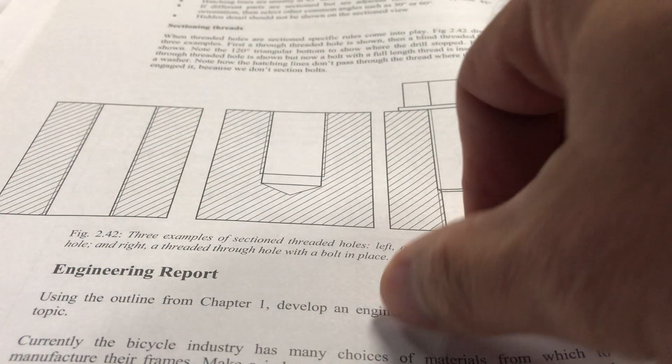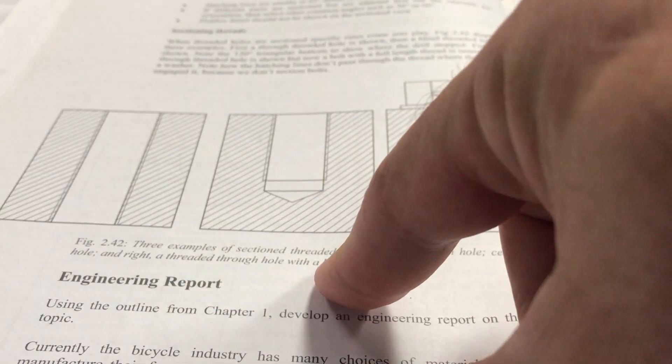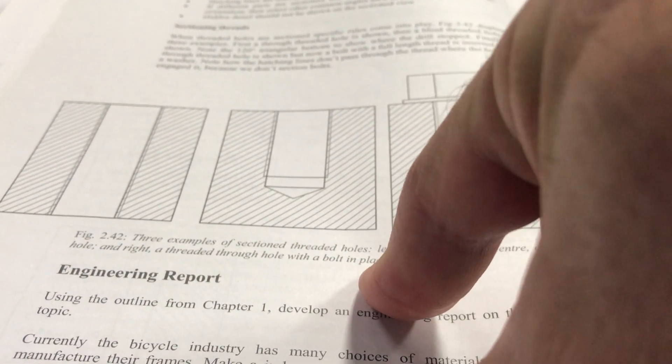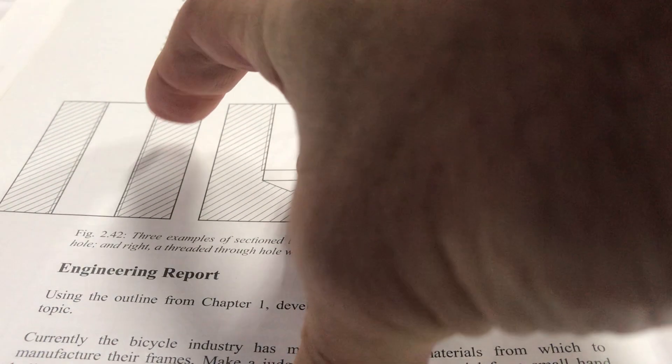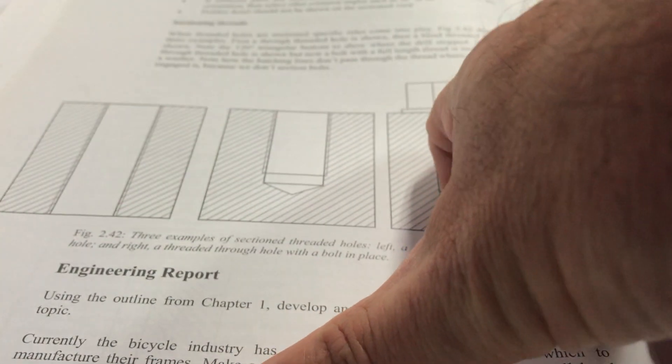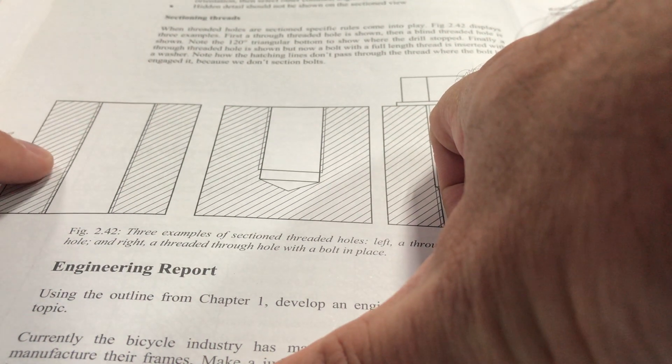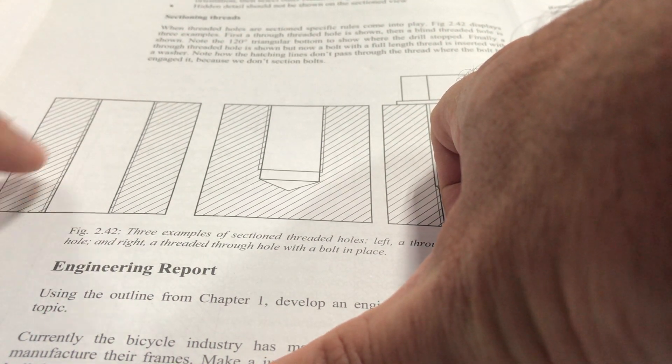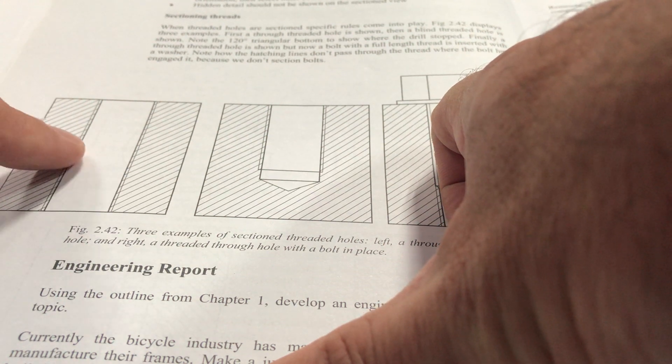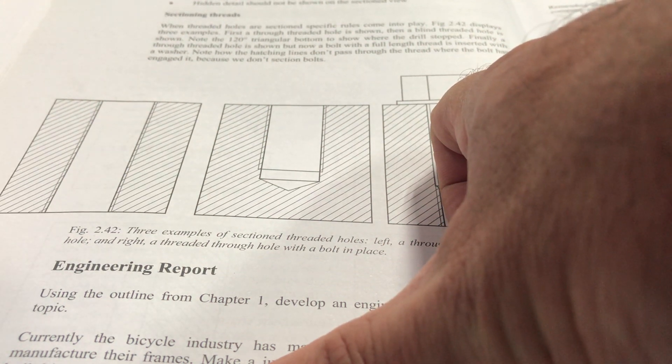So over here we've got three examples of sectioned thread holes. We have a hole that goes right through over here and you can see here that we have the actual hole diameter and we know it's threaded because we have, you can probably see there's like a line through here and then the inside of the hole on both sides. So the distance between those two lines is your thread depth.